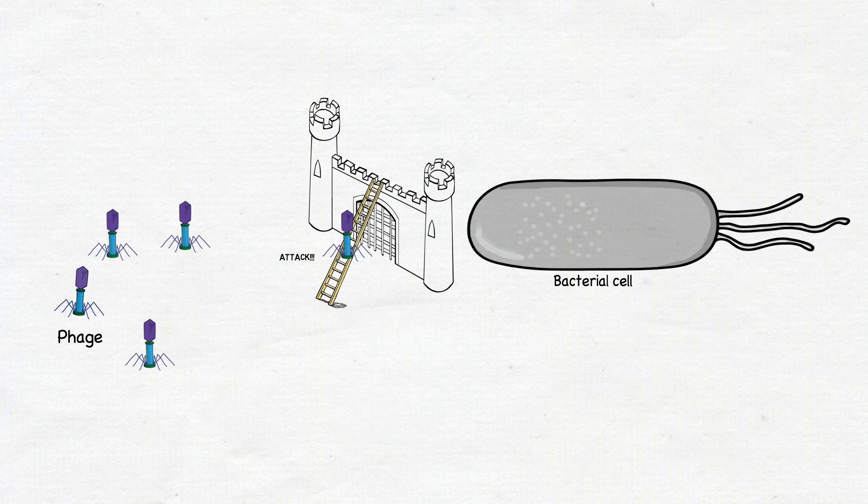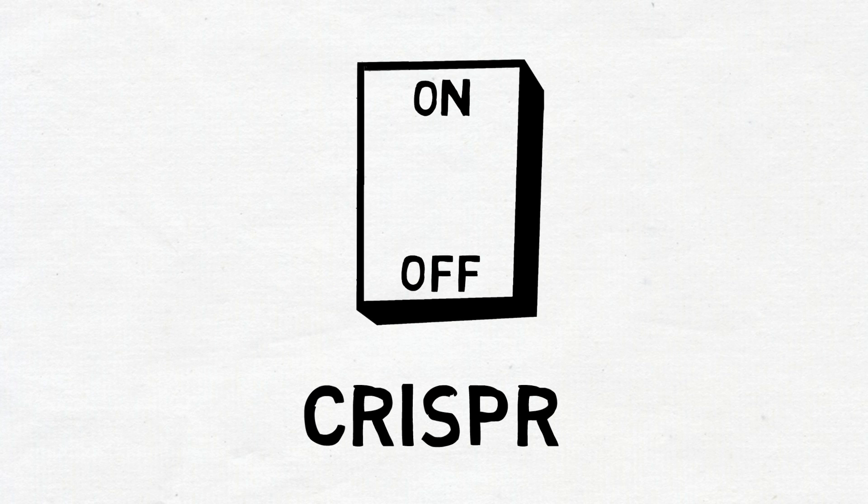In summary, by studying how phages outwit the CRISPR-Cas bacterial immune system, we were able to identify novel off-switches that can be used in gene editing. Their potential applications in medicine, agriculture, biotechnology, and basic research are limitless.